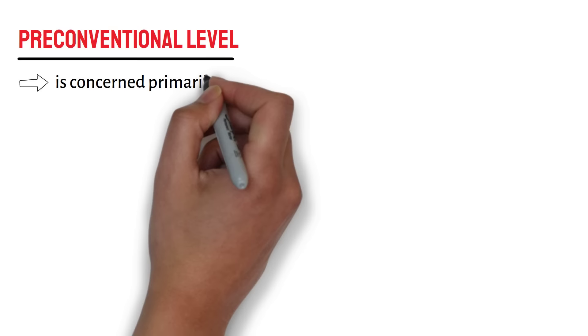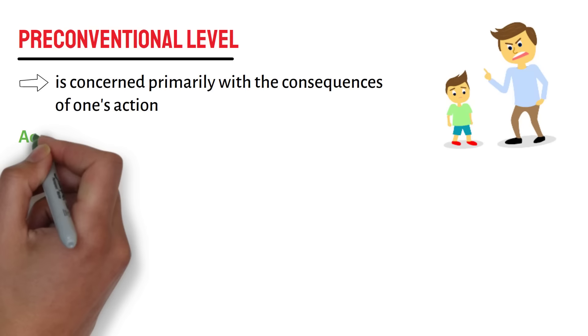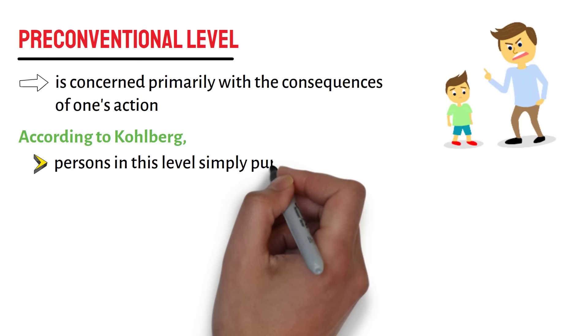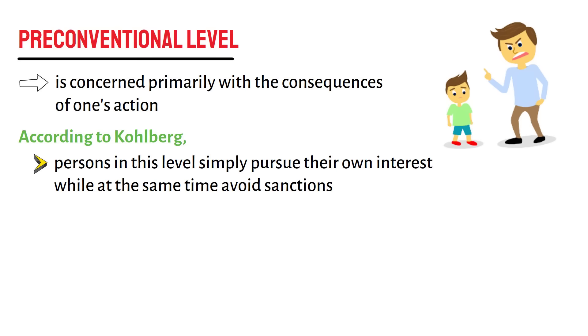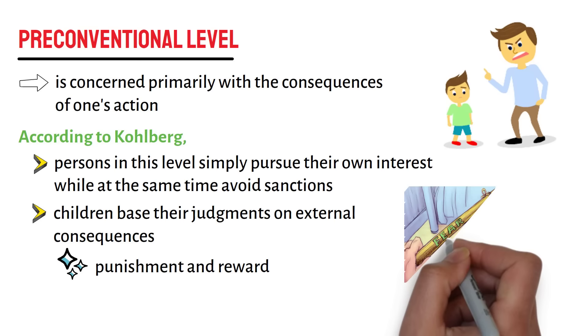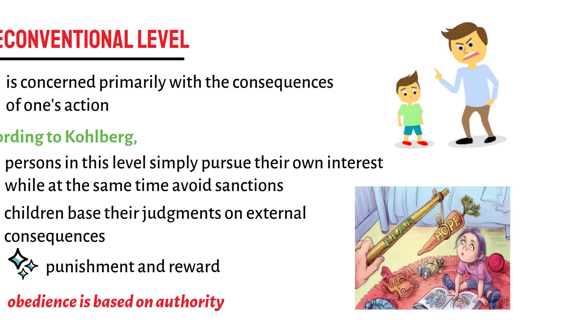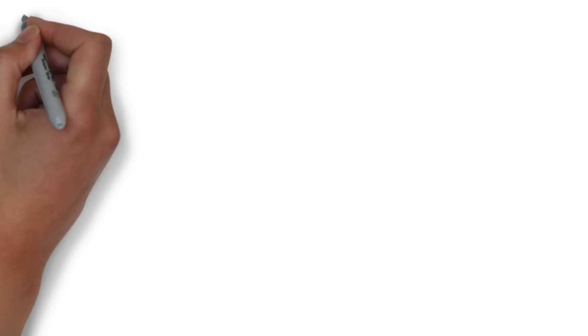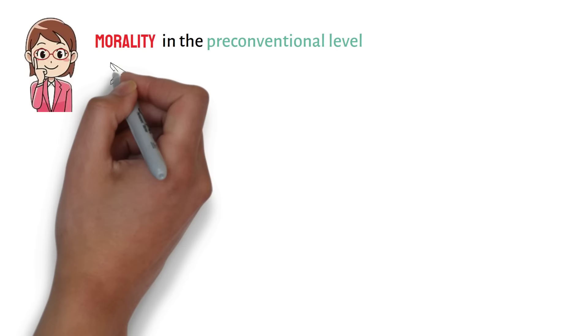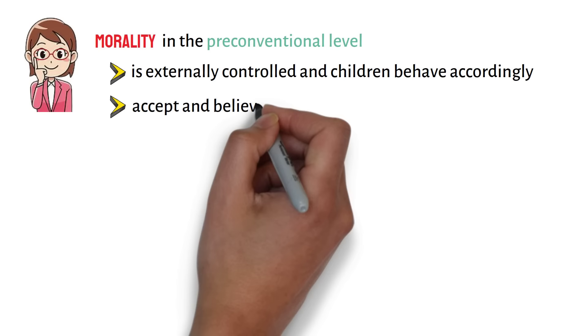The pre-conventional level is concerned primarily with the consequences of one's action. According to Kohlberg, persons in this level simply pursue their own interest while at the same time avoid sanctions. Children base their judgments on external consequences, for example, punishment and reward. Hence, at this level, obedience is based on authority. Morality in the pre-conventional level is externally controlled, and children accept and believe the rules imposed by authority figures such as parents, teachers, and community elders.